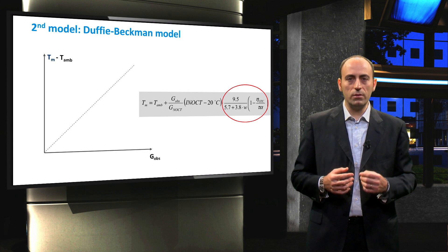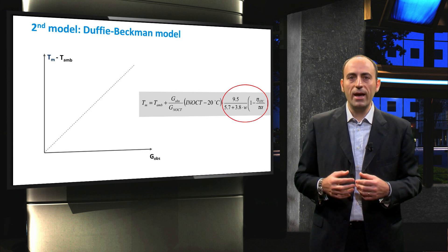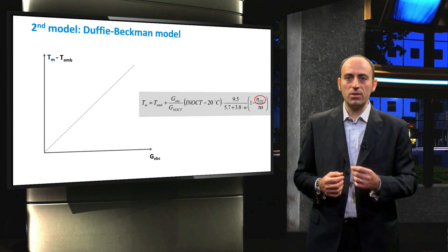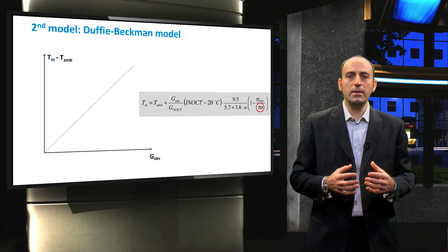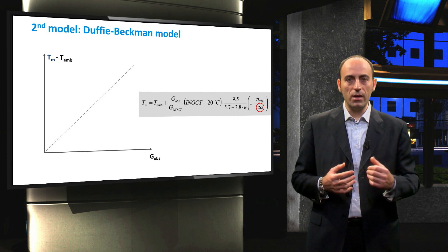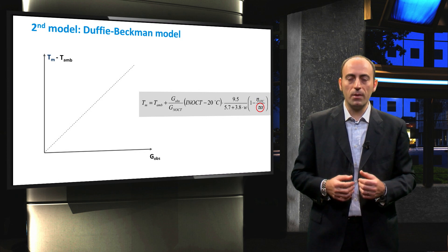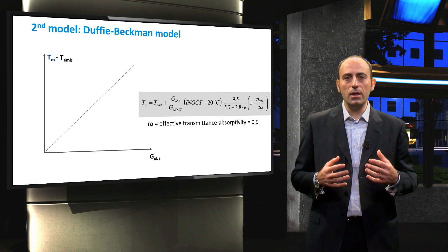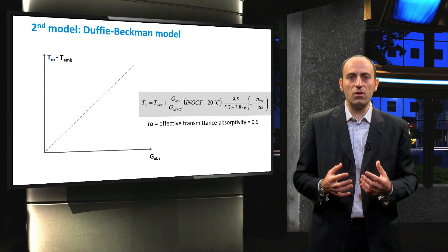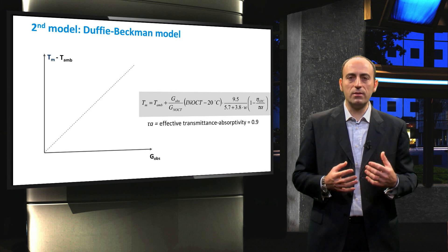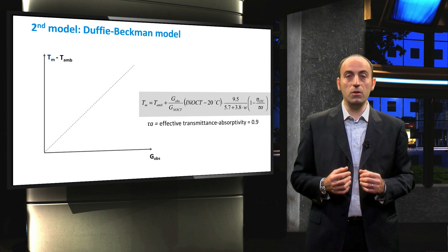Then, we have the efficiency of the module at STC and the tau times alpha, where tau is the transmittance of the front layers of the module and alpha is the absorptivity of the module. Hence, the product gives the fraction of incident light that is absorbed by the solar cells. Usually, the product tau alpha is assumed to be 0.9.